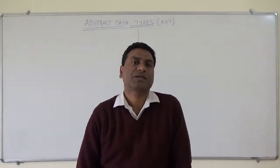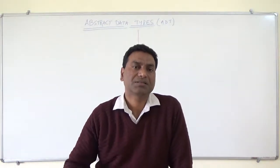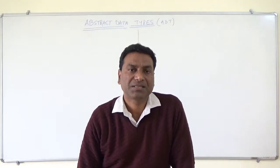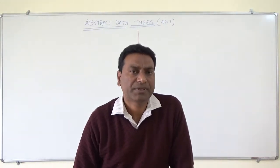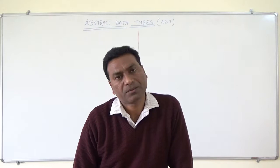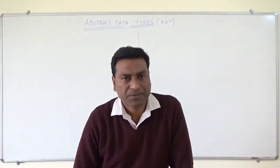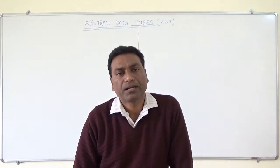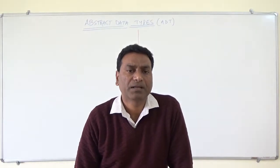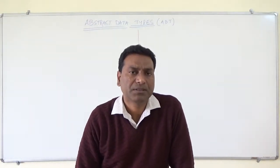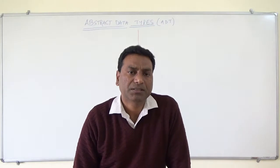Good morning students. Today I am going to explain the abstract data type. Abstract data type, or ADT, is basically a mathematical model in which a data type is defined by its behavior or semantics. This video covers the definition of the abstract data type, the difference between the abstract data type and the data structure, different abstract data types, and an example like list ADT — how it can be represented and what is the difference between the representation and the operations.